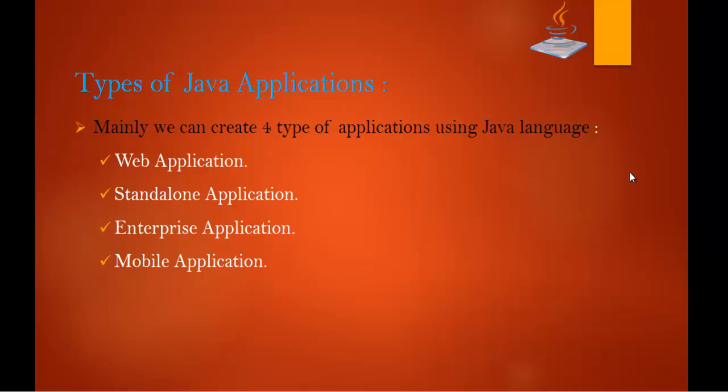So using Java we can build web applications using technologies such as Servlet, JSP, etc. Coming to standalone applications — these can also be called desktop applications or Windows-based applications. An application that needs to be installed on every machine, such as a media player or antivirus, is called a standalone application. AWT and Swing are the two technologies used in Java for creating standalone applications.